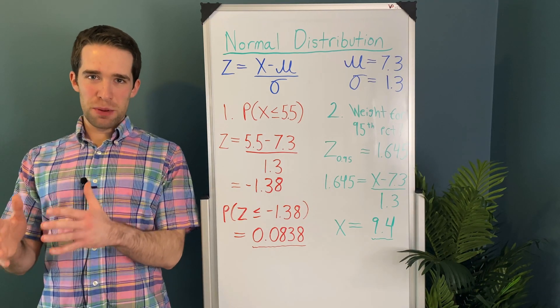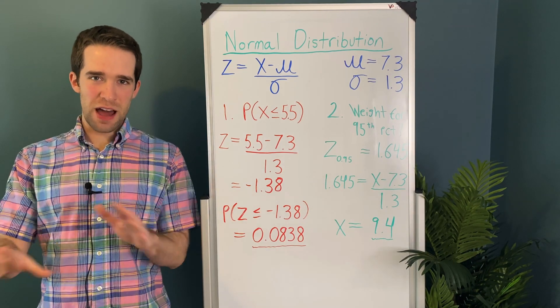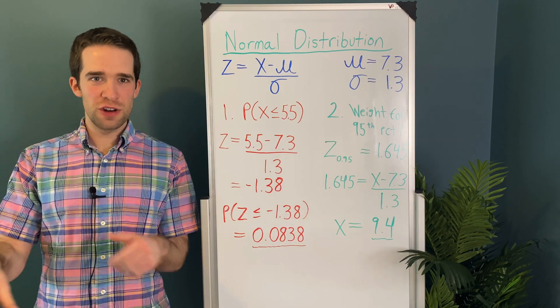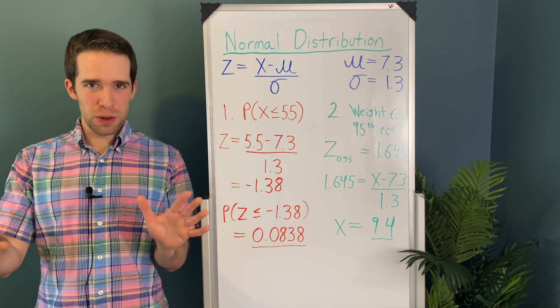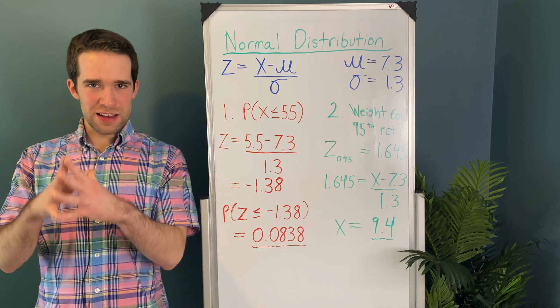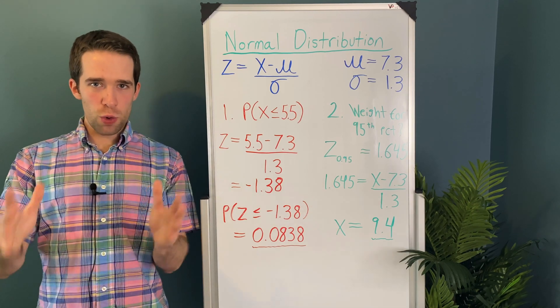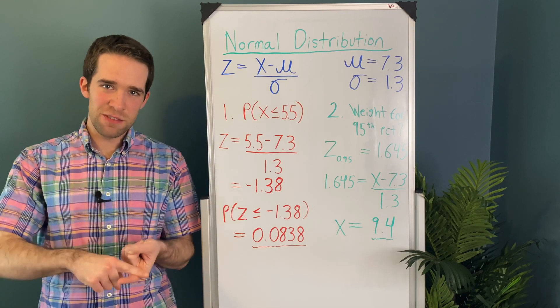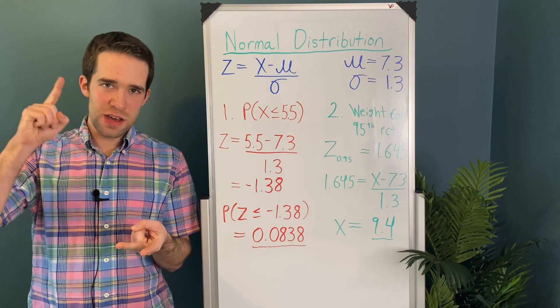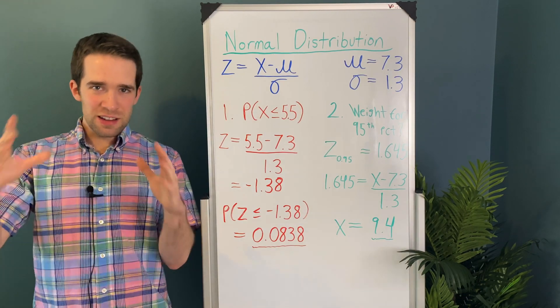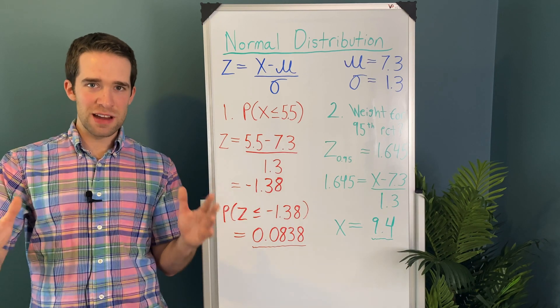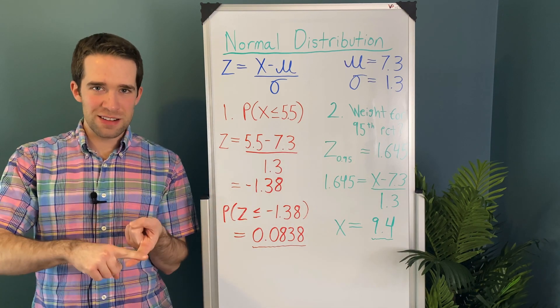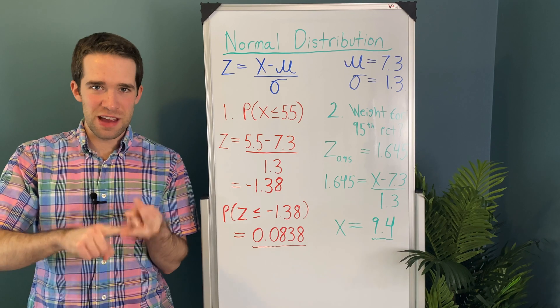Now that you've seen a couple examples and hopefully you get the idea of how to work with a normal distribution and z-scores and how simple it really is, just one last thing to point out. We've been working this whole time with a normal distribution where the mean is 7.3 and the standard deviation is 1.3. Let's say you took every data point in that distribution and you subtracted the mean and you divided by the standard deviation.